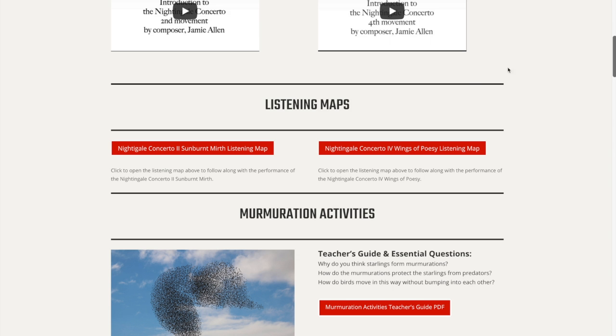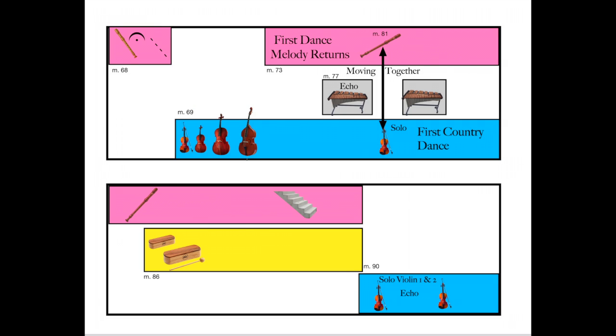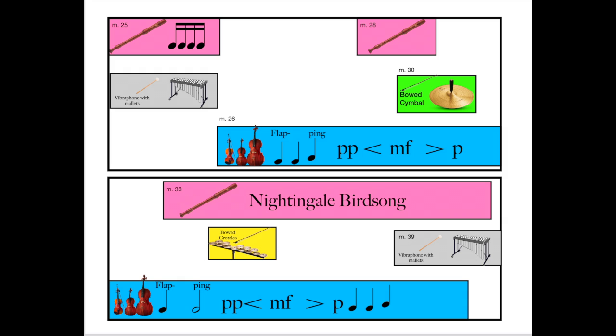As children listen to the Nightingale Concerto, they can access these colorful listening maps that illustrate the various combinations of instruments throughout each movement.